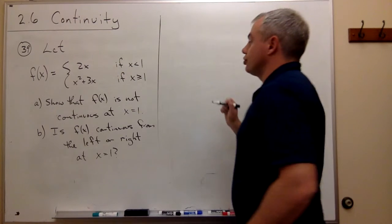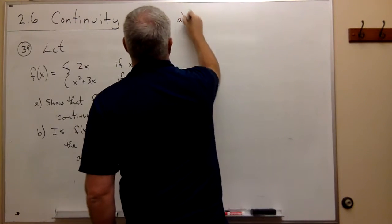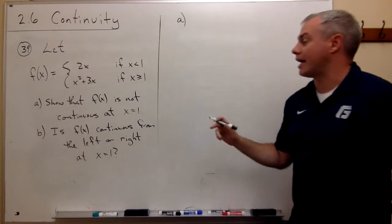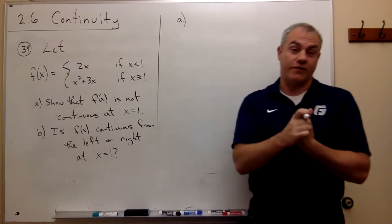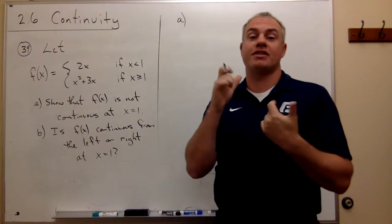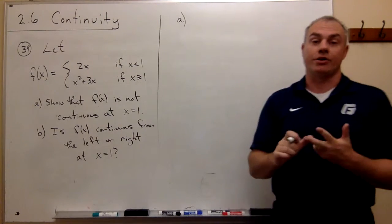Okay, so part A, to show that this function f(x) is not actually continuous at 1, we need to go through our three rules. We need to say, first of all, does it have a functional value at 1, does it have a limit value at 1, and are those the same?